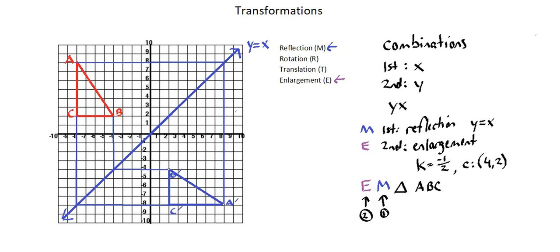That was our inner transformation, M. Now with this image, let's complete the outer transformation, E, the enlargement. We begin by identifying the center, which is (4, 2). The scale factor k equals negative one-half. The negative tells us that the image will be on the other side of the center from the object, and the one-half tells us that the distance from the center to an image point will be one-half the distance from the center to the corresponding object point.